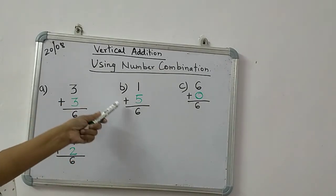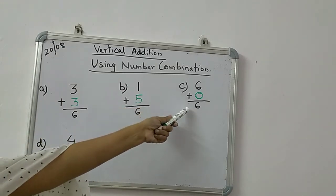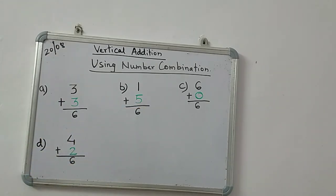3 plus 3 equals 6, 1 plus 5 is also 6, 6 plus 0 is also 6, and 4 plus 2 is also 6. So in this way you have to add vertically, and simultaneously you have to solve the number combinations.